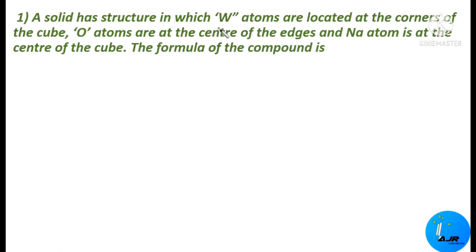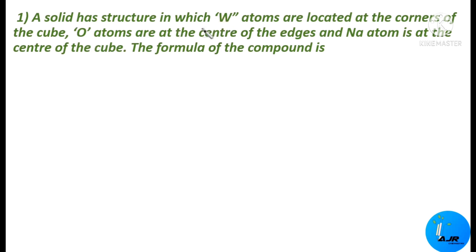Read the first problem: a solid has a structure in which W atoms are located at the corners of the cube, O (oxygen) atoms are at the center of the edges, and Na (sodium) atoms are at the center of the cube. Find the formula of the compound. The atoms are W (tungsten), oxygen, and sodium, located at different positions.